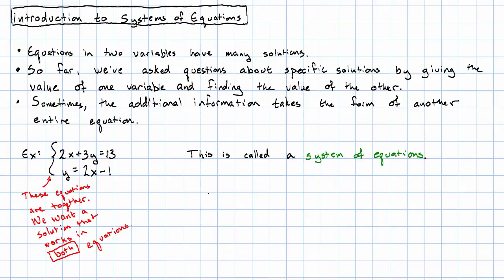In this case, we have a system of two equations with two unknowns. We can have systems with more equations, and we can have systems with more unknowns. Typically, in order to get a unique solution, we need to have as many equations as we have unknowns.